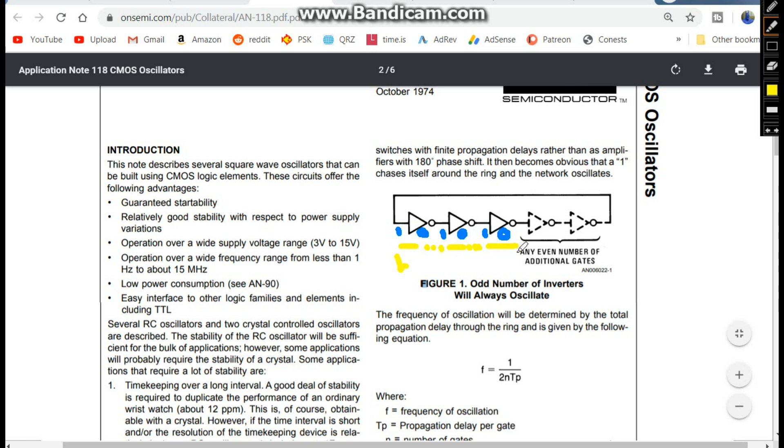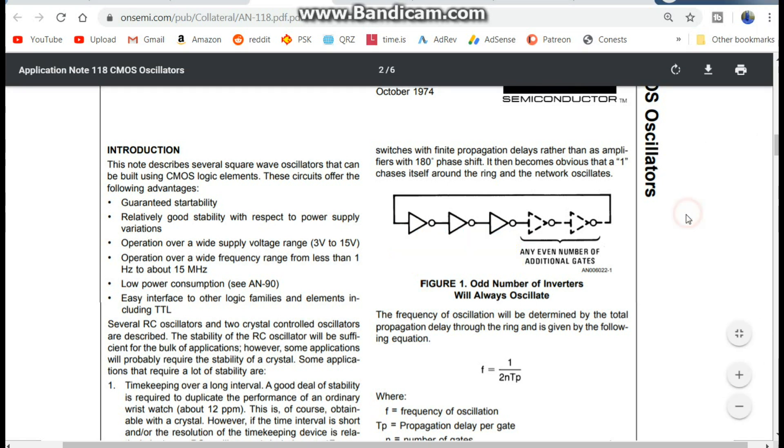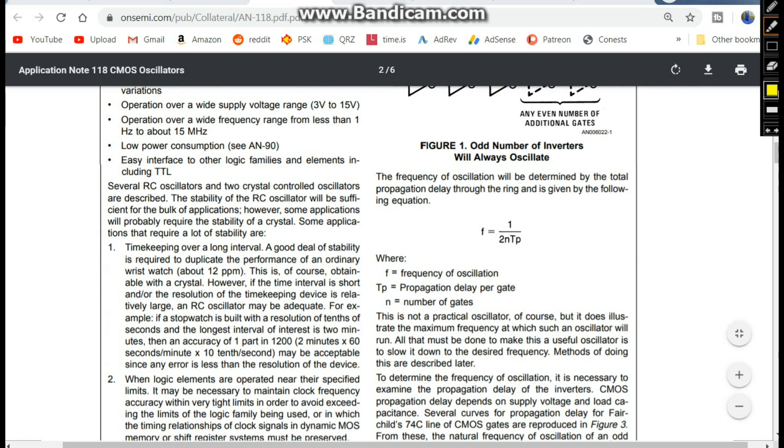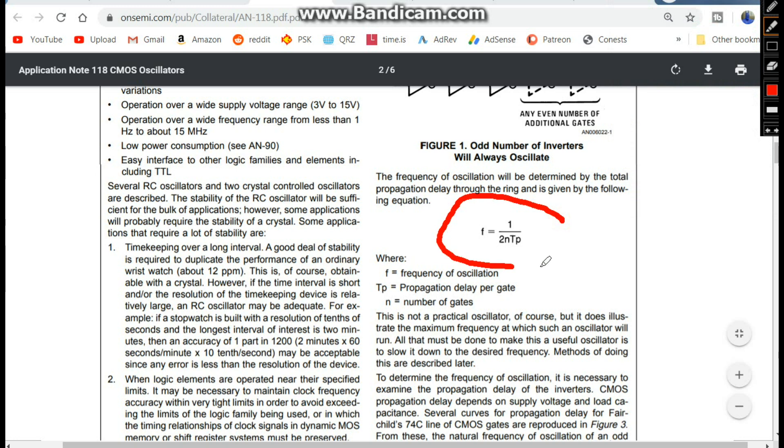So this amount of time right here, this is our propagation delay for our ring oscillator. And in theory, this formula will tell you the frequency at which you'll oscillate at. What it will actually tell you is the maximum frequency.